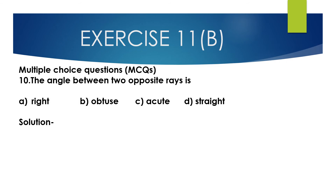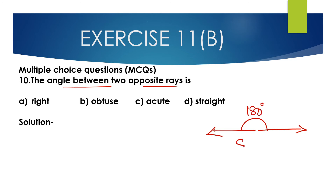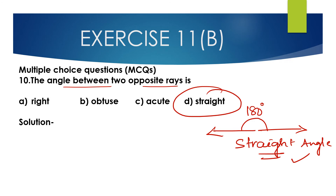Question number 10, multiple choice: The angle between two opposite rays is what type of angle? Options include right angle, obtuse angle, acute angle, and straight angle. Two opposite rays form a straight line, and the angle between them is 180 degrees. So option D — straight angle — is the correct option.